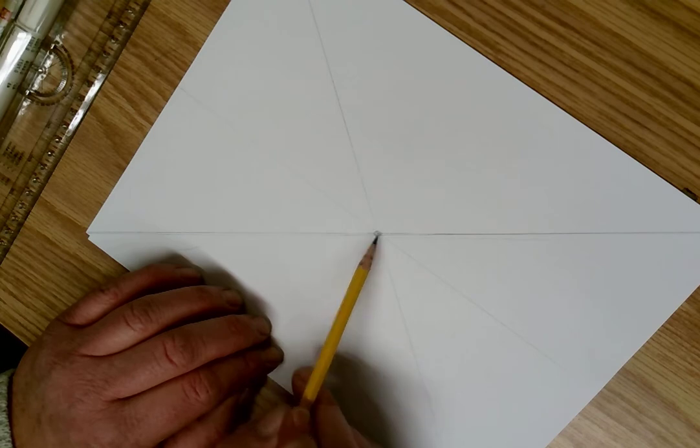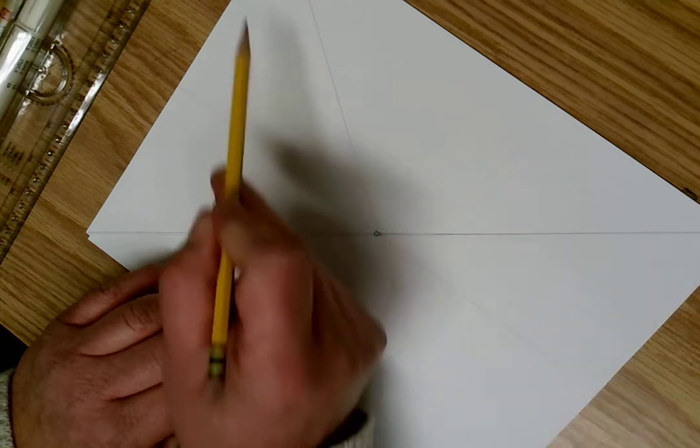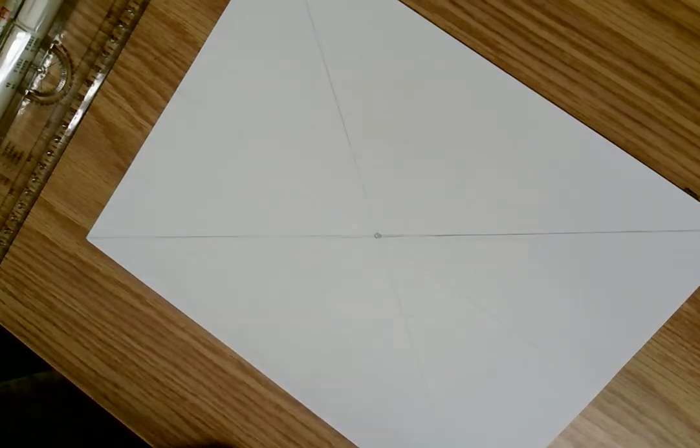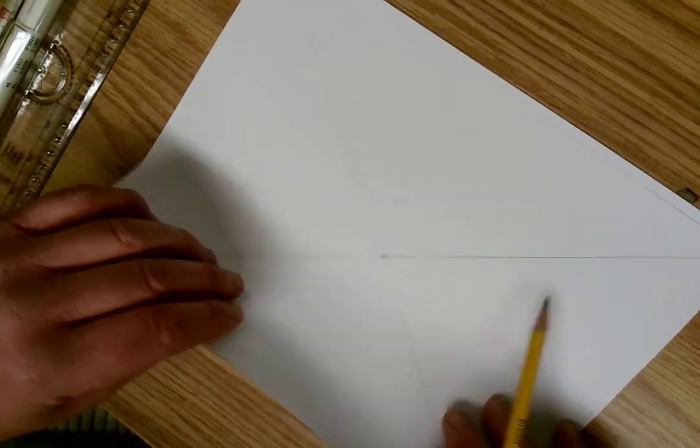We've got our vanishing point, we've got a horizon line, we've got our orthogonals going to our vanishing point. To get that, what you need to do is start with a clean sheet of paper.